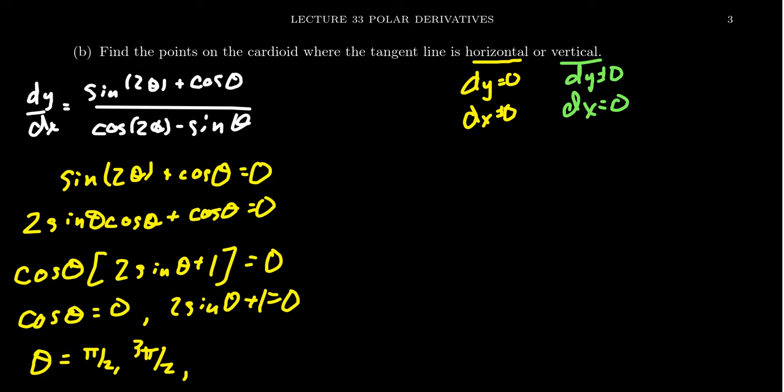For 2 sine theta plus 1 equals 0, solving gives sine theta equals negative one half. Since sine of pi sixth equals one half, using reference angles in the third and fourth quadrants where sine is negative, we get theta equals 7 pi sixth and 11 pi sixth. Since the whole cardioid is graphed from 0 to 2 pi, we only need theta between 0 and 2 pi. So the numerator is 0 at pi halves, 3 pi halves, 7 pi sixth, and 11 pi sixth.